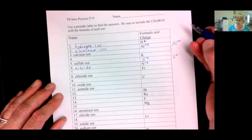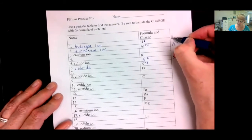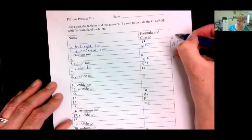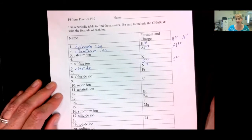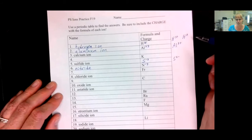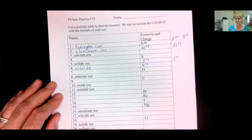By the way, when we write a positive one, we can write H plus one, H one plus, or we can write H plus. The one is not required. However, unlike math, the positive is required. You must write a positive or a negative to tell which type of ion you have.